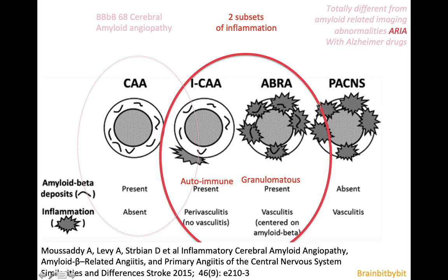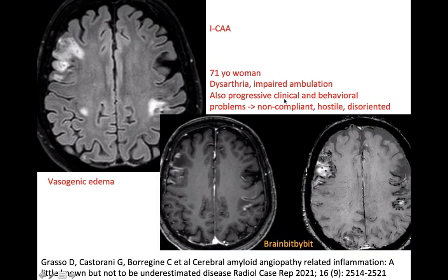On imaging, these two entities resemble each other. However, primary angiitis occurs in younger patients than amyloid beta-related angiopathy, which typically occurs in the seventh decade. MRI is not a microscope, so it may be difficult to distinguish both inflammatory forms of CAA.